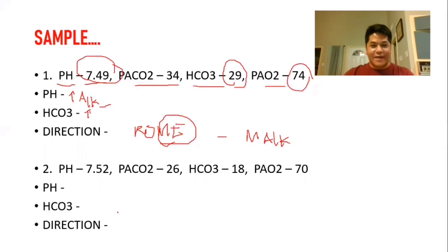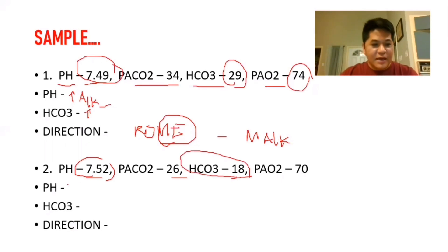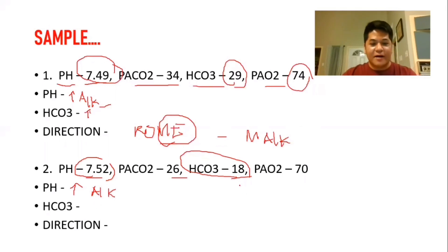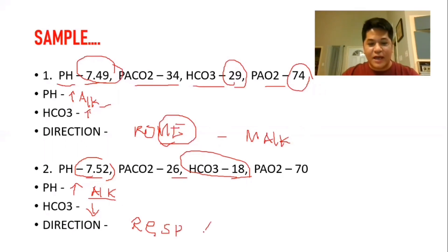Example two: pH is 7.52, PaCO2 is 26, bicarbs is 18, and PaO2 is 70. The pH is 7.52 — that's an increase, so alkalosis. The bicarbs is 18 — that's a decrease from the normal 22 to 26. The pH increased and bicarbs decreased — opposite directions. According to ROME, opposite direction means respiratory. Therefore, the answer is respiratory alkalosis.